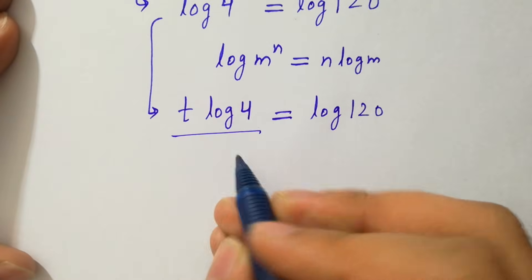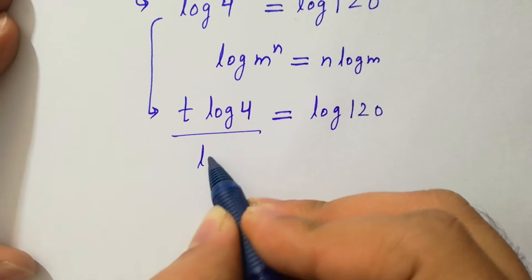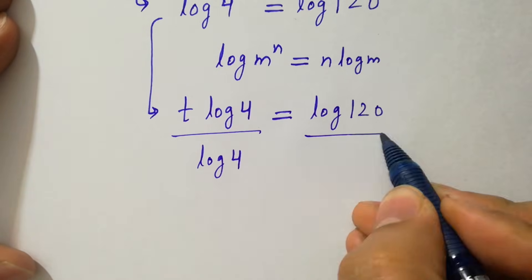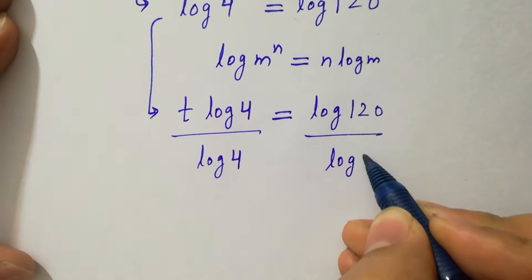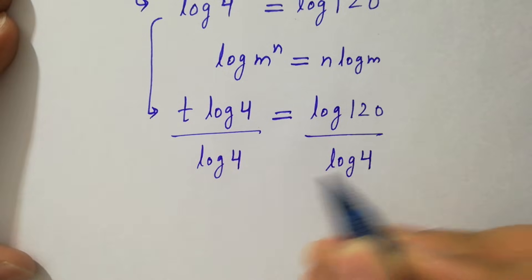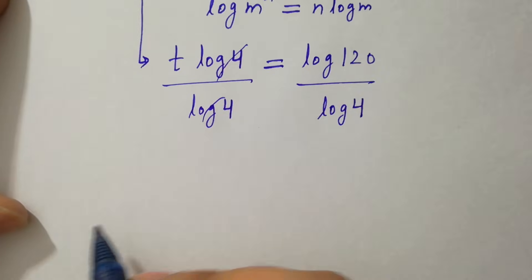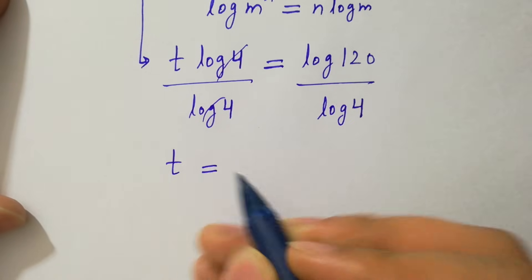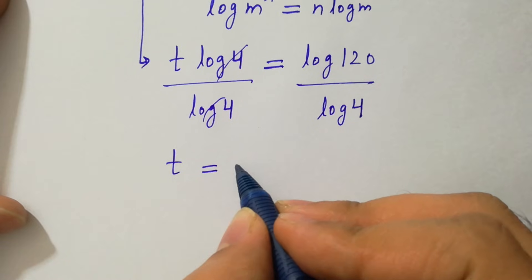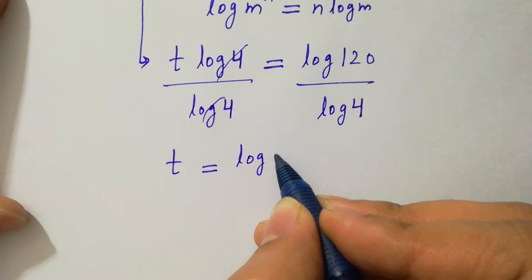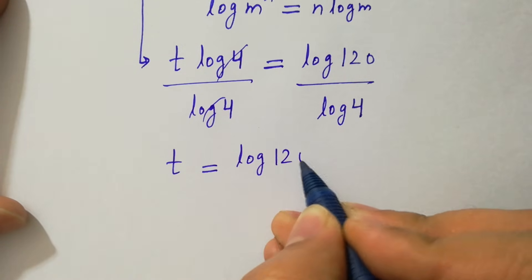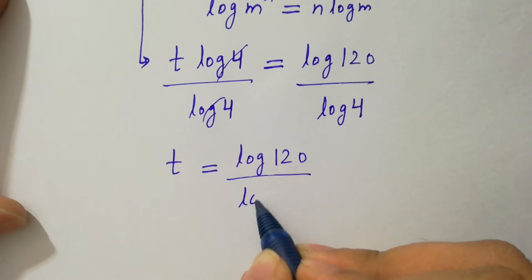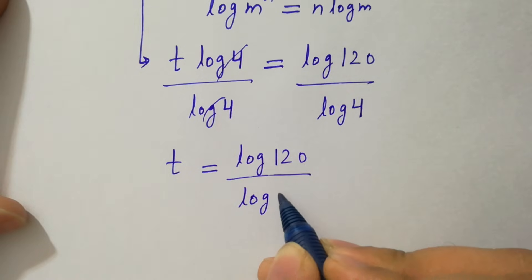Dividing by log 4 on both sides, log 4 cancels, and t will be equal to log 120 over log 4.